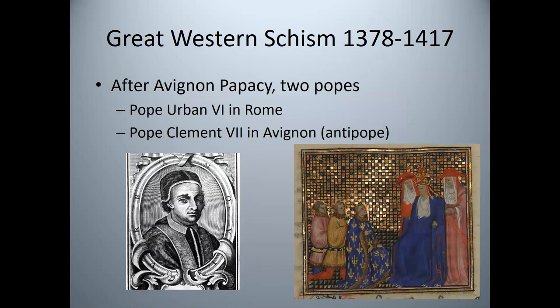Toward the end of the medieval period, a second split occurred called the Great Western Schism of 1378 to 1417. It all started with the Avignon Papacy, a period from 1309 to 1376 when the French Pope refused to live in Rome, so the papacy was moved to Avignon, France for 67 years.